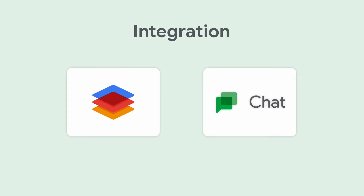The Chat API enables developers to build their own tools and workflows on top of Google Chat. This capability can be used when organizations want to connect, for example, their incident management system to Google Chat, to programmatically create a Google Chat space and add the relevant team members to the space whenever an incident is escalated.